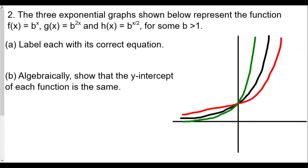Question number two: three graphs shown represent f of x equals b to the x, g of x equals b to the 2x, and h of x equals b to the x over 2, for some value of b greater than 1. Label each with its correct equation. The function f of x, b to the x, should be the one in the middle, since the multiplier on x for f of x is just 1, for g of x it is 2, and for h of x it is one half.